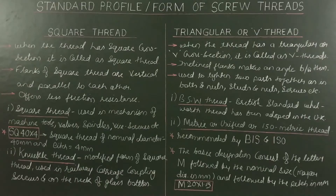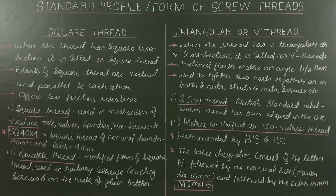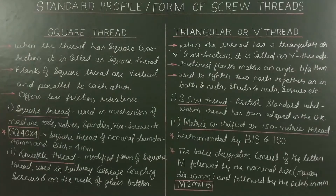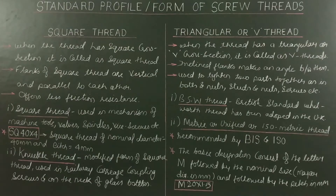In case of square threads, flanks are vertical and parallel to each other, and it offers less friction resistance. Types of square threads include square thread and knuckle thread. The square thread is used in mechanisms of machine tools, valves, spindles, and vice screws. It is specified by nominal diameter and pitch — for example, a square thread of nominal diameter 40mm and pitch 4mm is designated as SQ 40×4, where SQ means square thread, 40 is the nominal diameter in mm, and 4 is the pitch in mm.